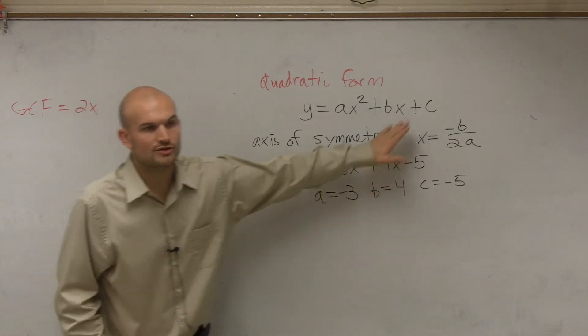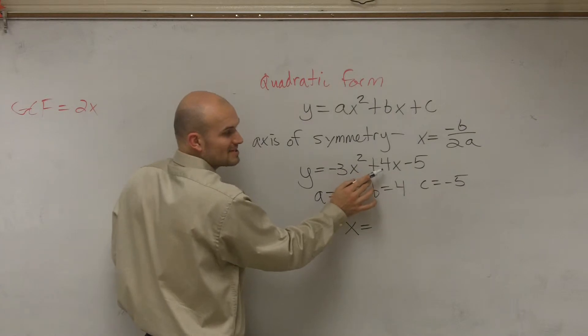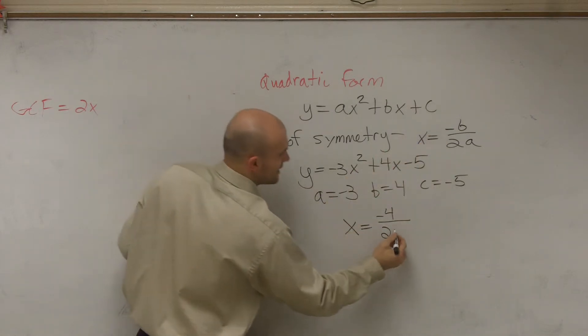So then all you're going to do to find your axis of symmetry is just do x equals opposite of b. That means the opposite sign. So since b is positive 4, it's going to be negative 4 divided by 2 times a, which is negative 3.